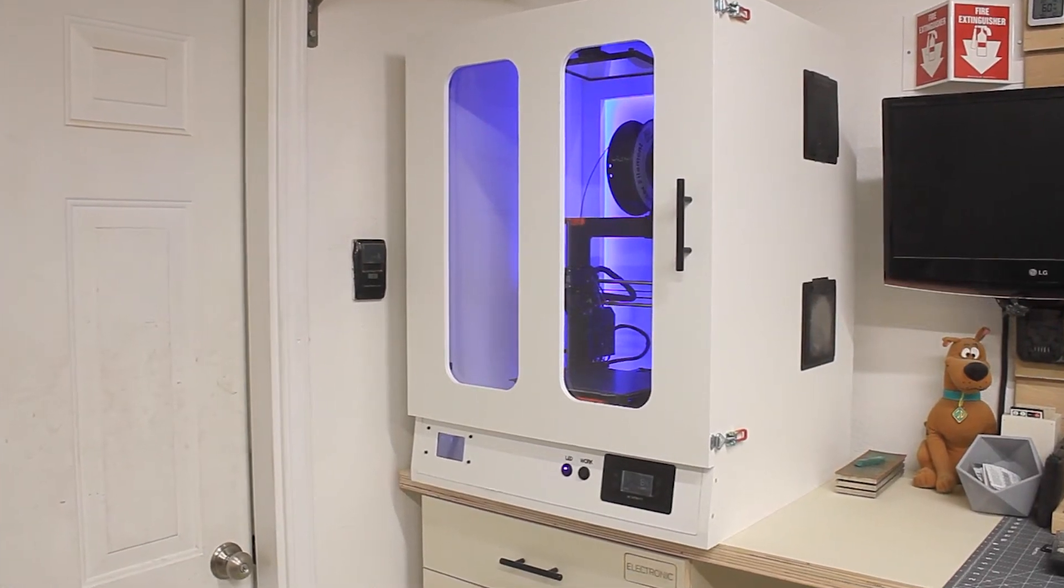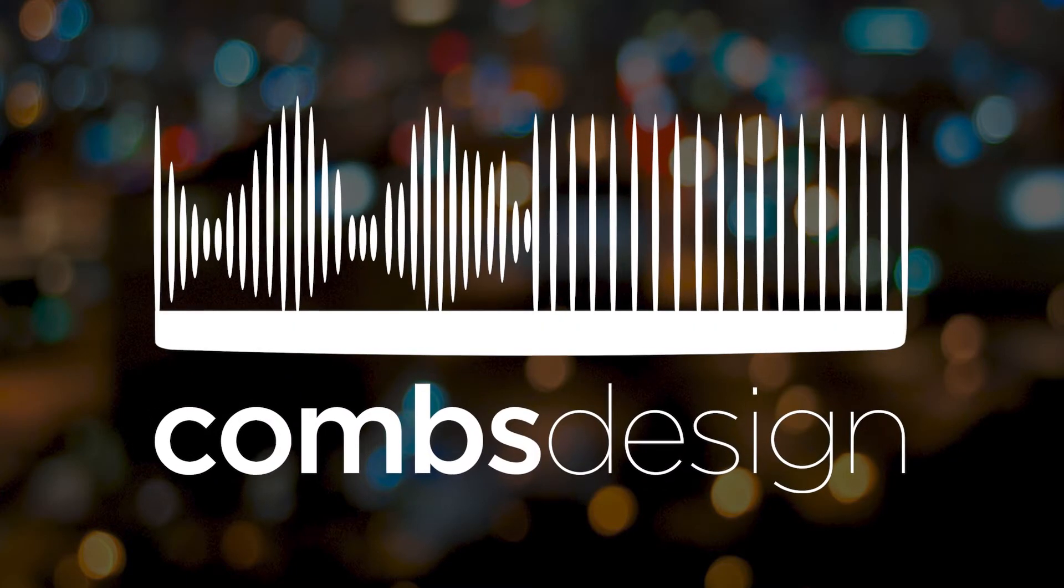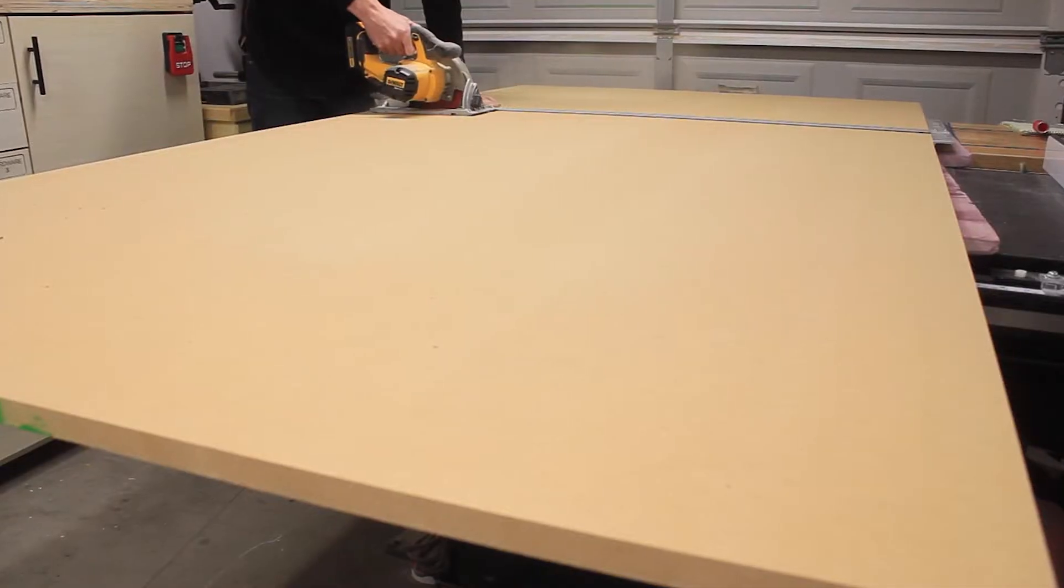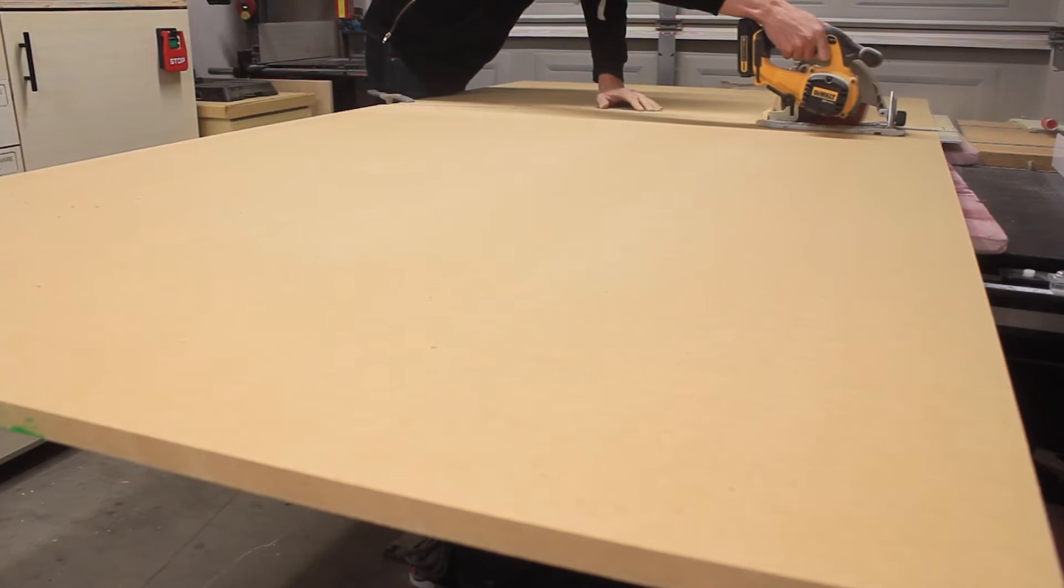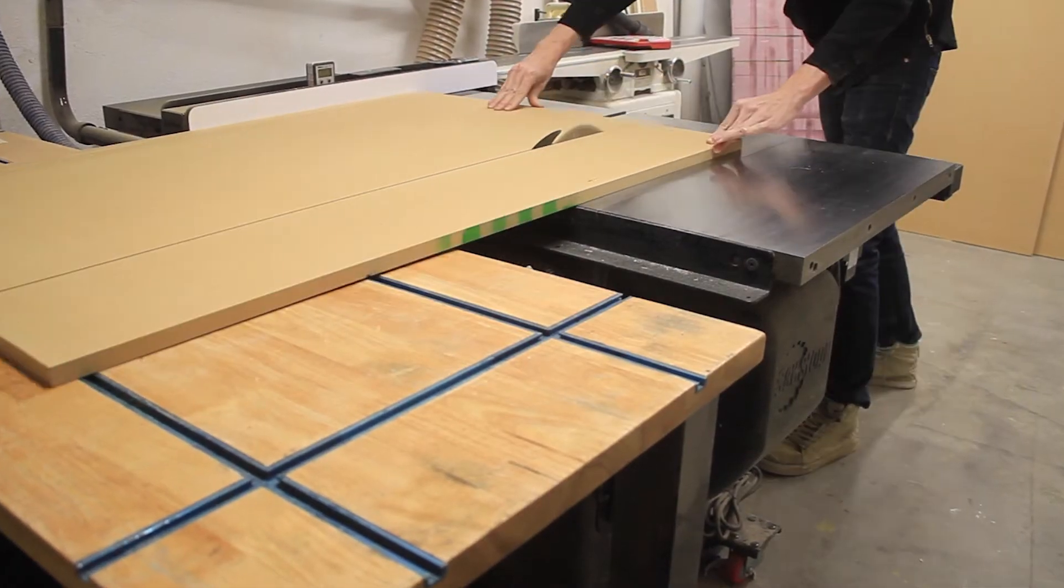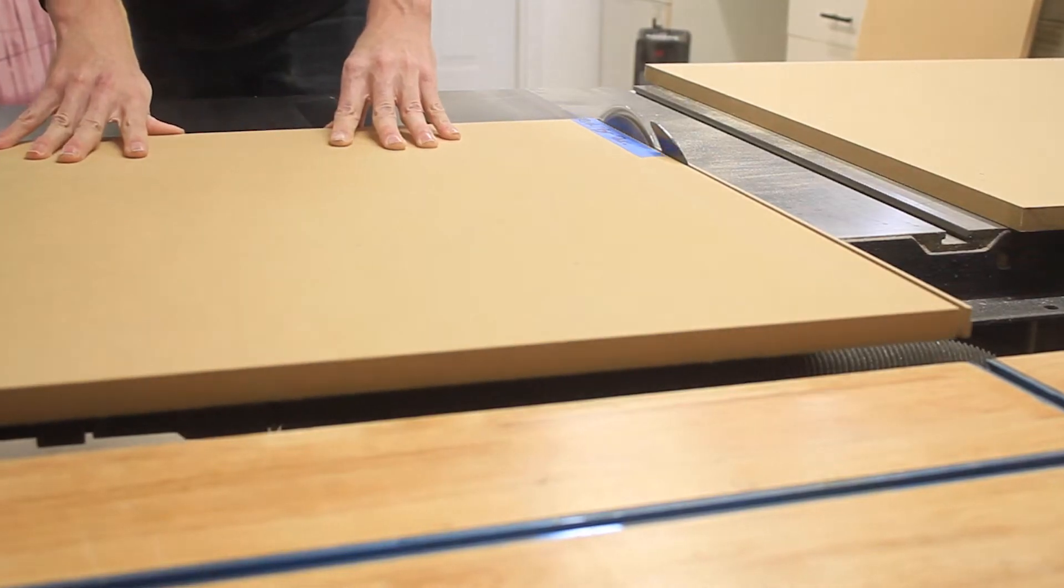Today we're going to build an enclosure for my 3D printer on Combs Design. This enclosure is built completely out of three-quarter inch MDF. I chose MDF for this project over plywood because it's a better insulator.